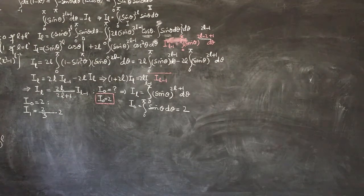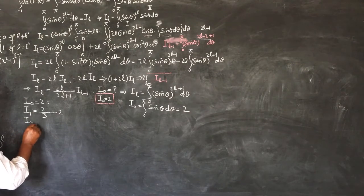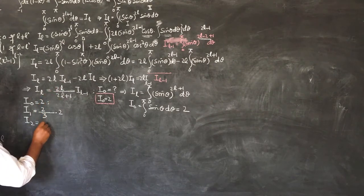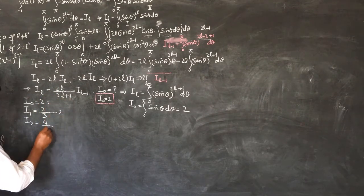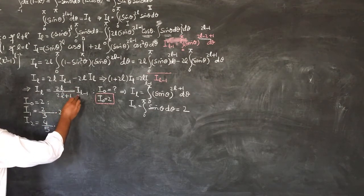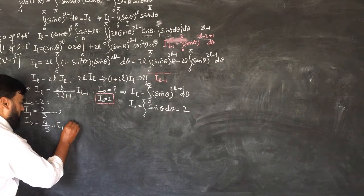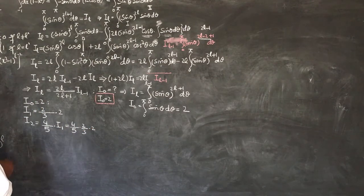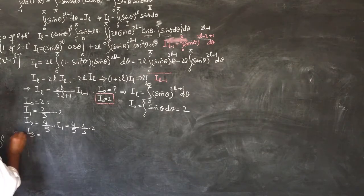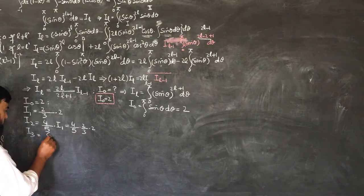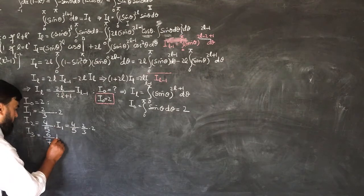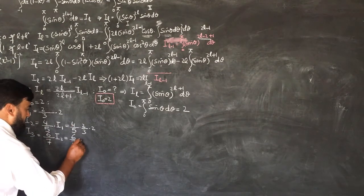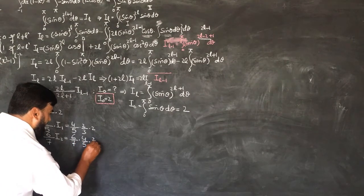What about I2? I2 = (4/5)·I1 = (4/5)·(2/3)·2. And I3 = (6/7)·I2 = (6/7)·(4/5)·(2/3)·2. Continuing this pattern, each IL is built from the previous one using the recurrence IL = 2L/(2L+1) · IL-1.